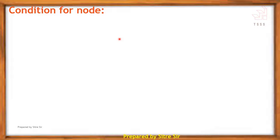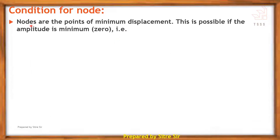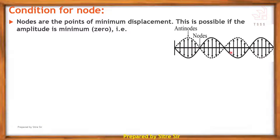A node is the point of minimum displacement. This is possible if the amplitude is minimum, that is zero. As seen in the diagram, two simple harmonic progressive waves travel in opposite directions and form a stationary wave with loops. Points of minimum (zero) amplitude are called nodes; points of maximum amplitude are called antinodes.